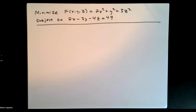This question is to minimize the function f of x, y, z equals 2x squared plus y squared plus 3z squared, subject to the constraint 2x minus 3y minus 4z equals 49.